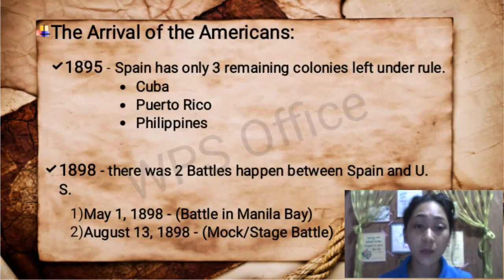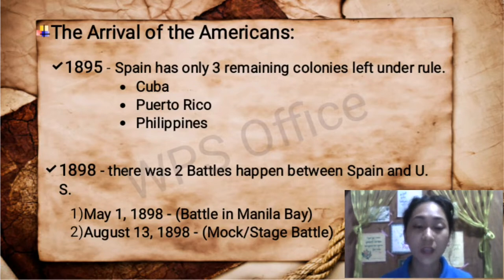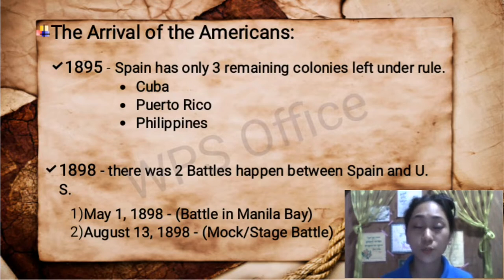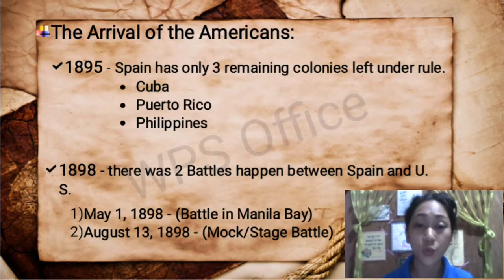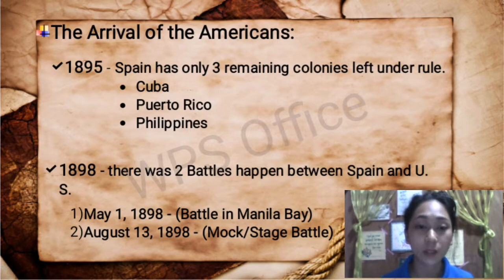The Arrival of the Americans. In 1895, Spain had only three remaining colonies: Cuba, Puerto Rico, and the Philippines. A Cuban revolution broke out and the United States extended its helping hand to Cuba, because the liberation of Cuba would give them an advantage especially in trading relations with other nations. Eventually, Cuba was able to rise against the Spaniards.